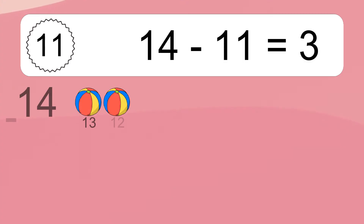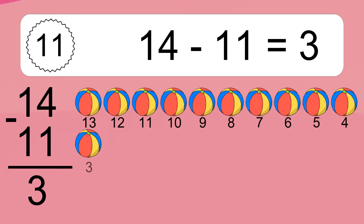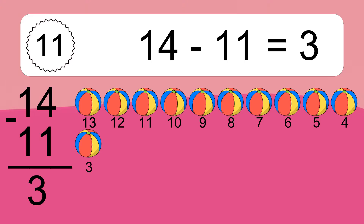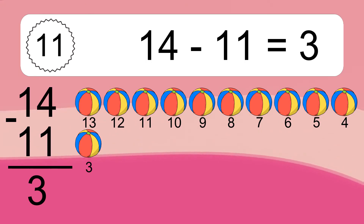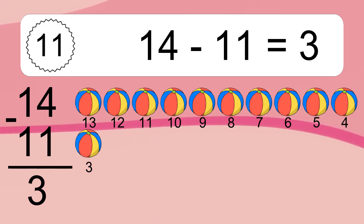14 minus 11 equals 3. Let's count it: 13, 12, 11, 10, 9, 8, 7, 6, 5, 4, 3.